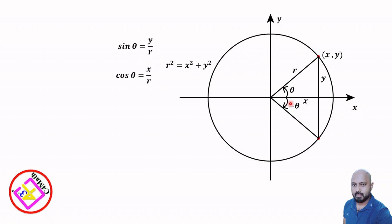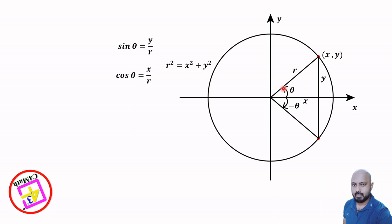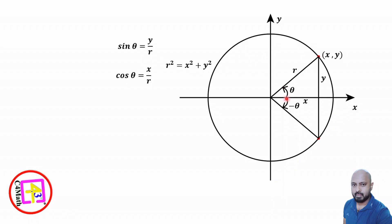The positive direction is always the anticlockwise direction. The anticlockwise direction angle is always positive, and the clockwise direction angle is always negative.